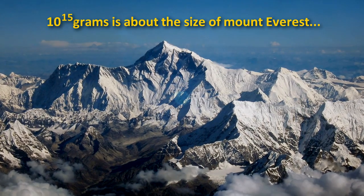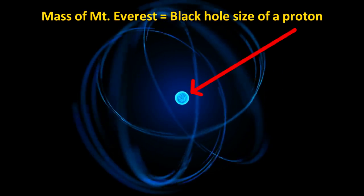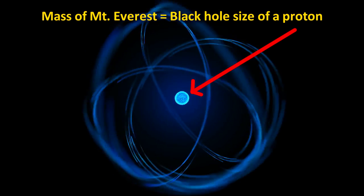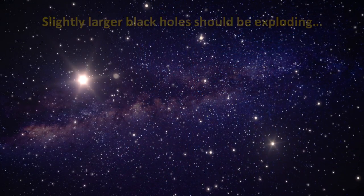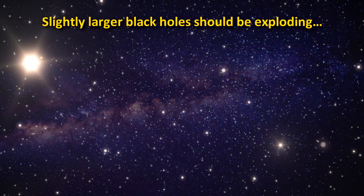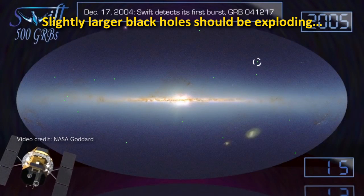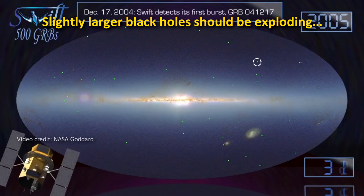They would only be about the size of a proton, by the way. Hawking theorized that such tiny black holes could have existed at the time of the big bang. But it also means that black holes slightly larger than 10 to the 15 grams would be evaporating around this time in our universe. And if this is happening, it means that we should see a bunch of gamma ray bursts. Do we detect gamma ray bursts?